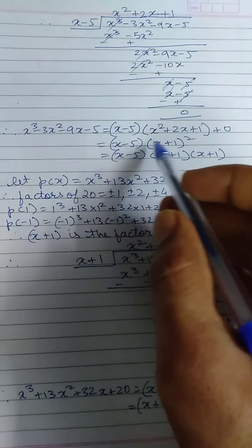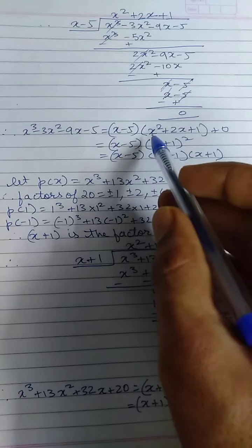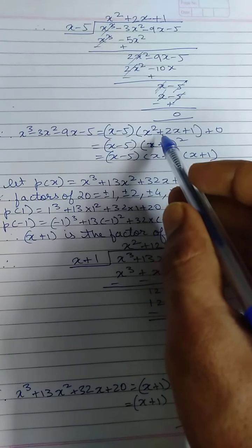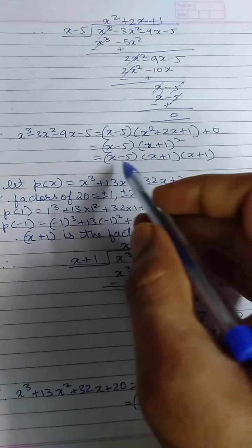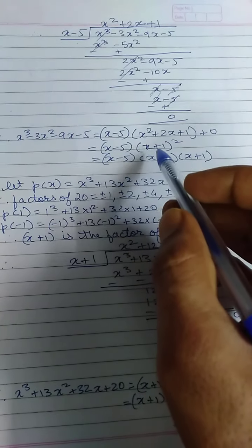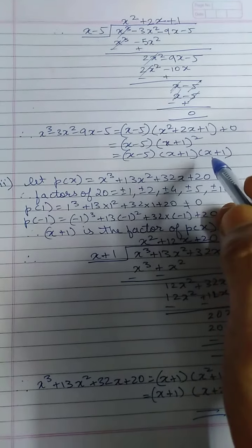Now I can write this as x minus 5 into x plus 1 whole square because this quotient is in the form a square plus 2ab plus b square. So I can write this as x plus 1 whole square. My factors are now x minus 5, x plus 1 and x plus 1.